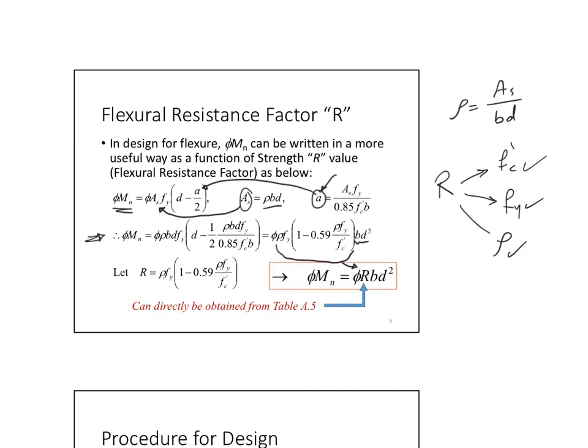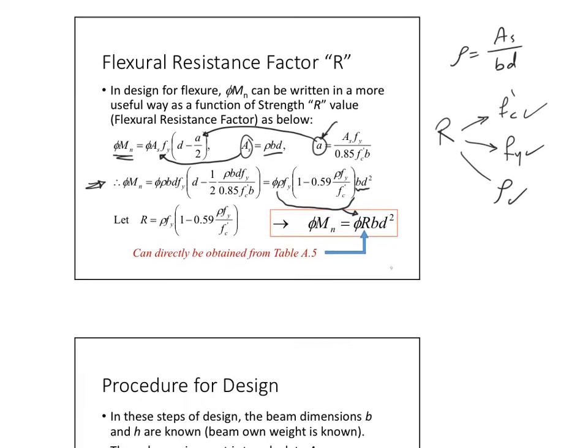So for any steel ratio, same F yield and F prime C, my R is the same. So same of the three, R is the same. So they kind of converted that big factor, all of these big numbers, and for us to save time, we put them together as a one factor. So in fact, this reduces the effort of calculating all of this. By just picking up any steel ratio, I'll be able to know what my phi MN right away is. Does that make sense? So once you know the R, you can simply calculate your phi MN.